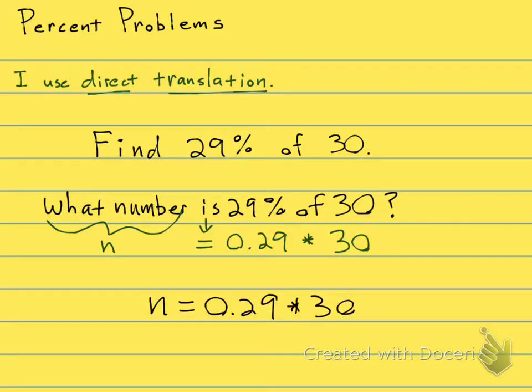Now, I don't need to solve, my n is already by itself. So all I need to do is grab my calculator and do 0.29 times 30. Okay, let's do it. 0.29 times 30 equals 8.7.